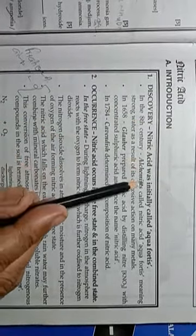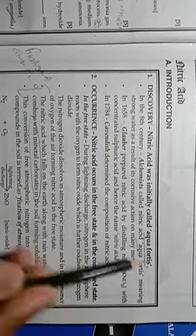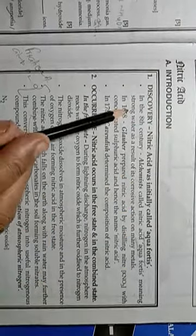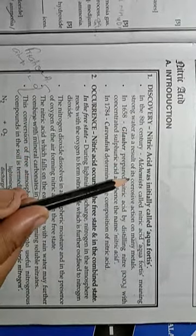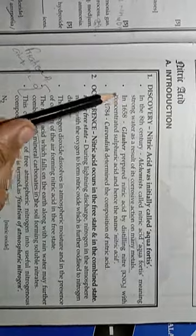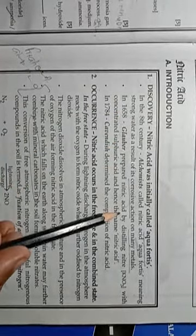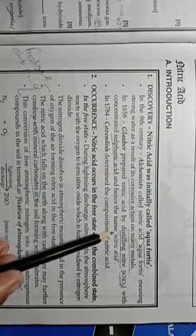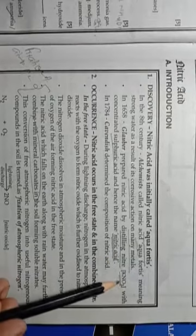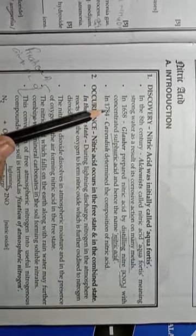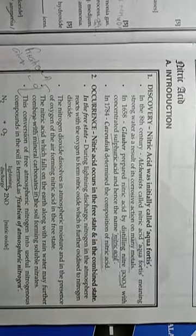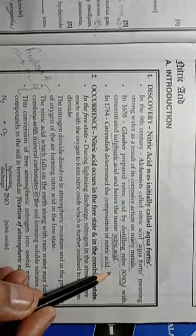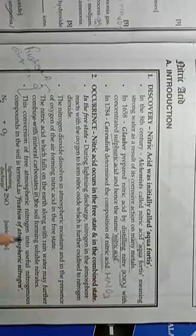Nitric acid was initially called aqua fortis. In the 18th century, alchemists called it aqua fortis meaning 'strong water' due to its corrosive action on many metals. In 1658, Glauber prepared nitric acid by distilling nitre (KNO3) with concentrated sulfuric acid, and hence the name 'nitric acid' because it is obtained from nitre. In 1784, Cavendish determined the composition of nitric acid - that is, the elements present per molecule.